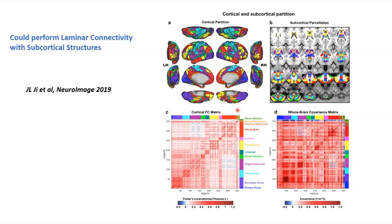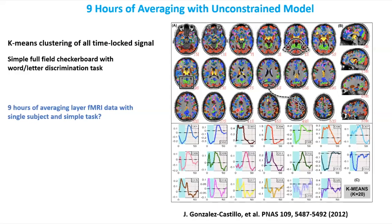This is an example — not really a laminar study but high resolution — looking at subcortical-cortical connectivity. There's much more that could be done with that in terms of task modulation. And this is a dataset by Javier Gonzalez-Castillo, who put subjects in the scanner for nine hours doing a very simple motor task — tapping fingers when recognizing an aspect of a stimulus.